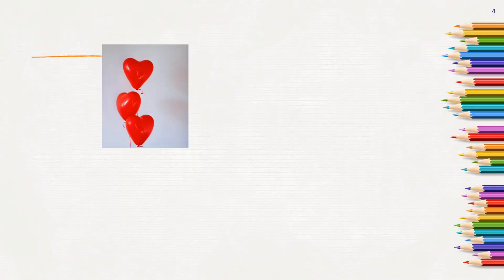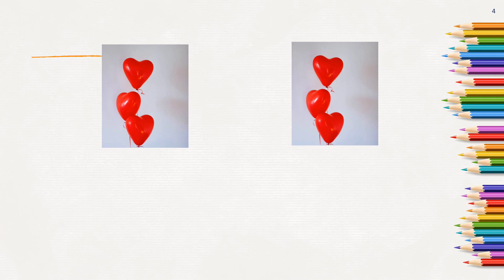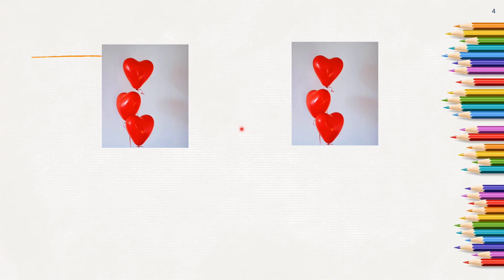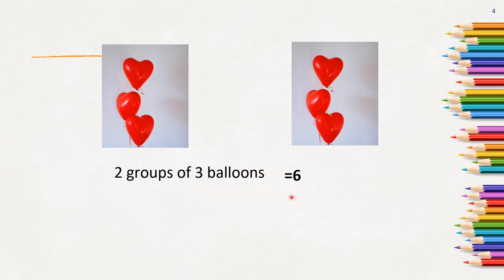Look at another example here. There are 2 groups of 3 balloons. In each group there are 3 balloons and there are 2 groups. So we need to add 3 plus 3. What is 3 plus 3? It is 6. Count the number of balloons: 1, 2, 3, 4, 5, 6. So there are 6 balloons. We can say 2 multiplied by 3 equals 6. Two groups of 3 balloons will be 6 balloons.